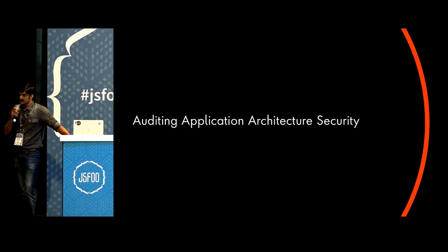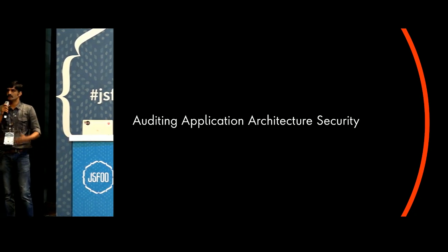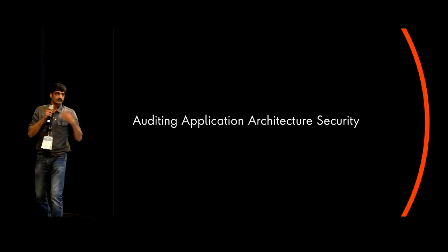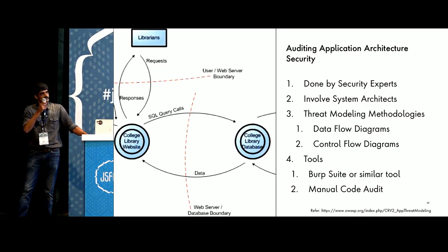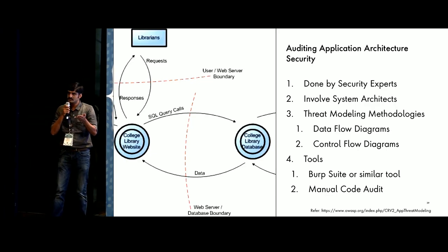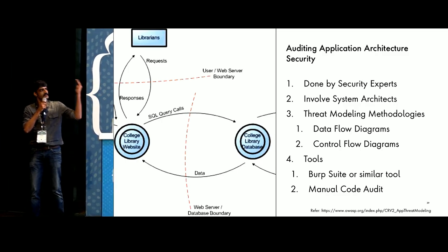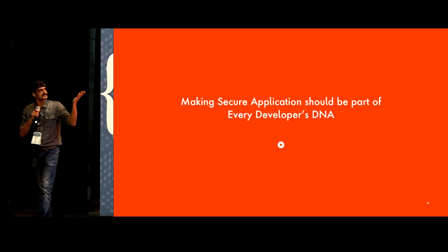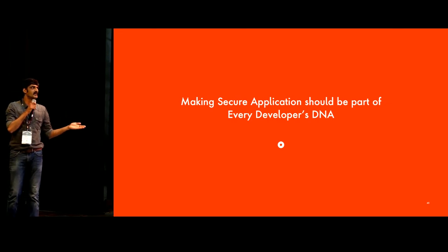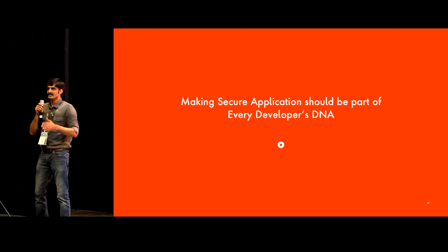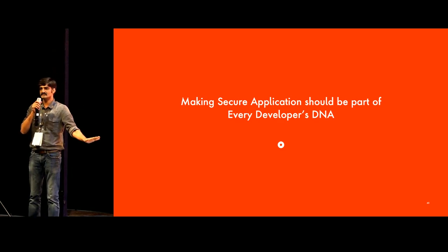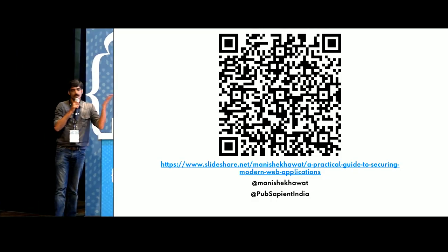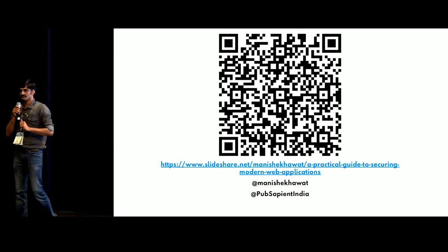The last bit: auditing the architectural security. Before every release, we should have an audit. Those audits are usually done by security experts, but you should also involve system architects and follow threat modeling models, using tools like Burp Suite and manual code audits. Making secure applications should be part of every developer's DNA. It is not a post-implementation affair — once the application is developed, now you have to fix security issues. You can scan the QR code and download the slides for future reference. Thank you.